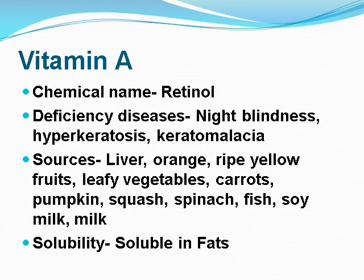Vitamin A: its chemical name is retinol. Deficiency diseases caused by Vitamin A include night blindness, hyperkeratosis, and keratomalacia. Sources of Vitamin A include liver, orange, ripe yellow fruits, leafy vegetables, carrots, pumpkin, squash, spinach, fish, soy milk, and milk. Solubility: it is soluble in fats.